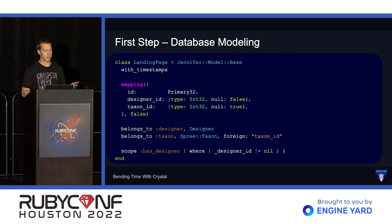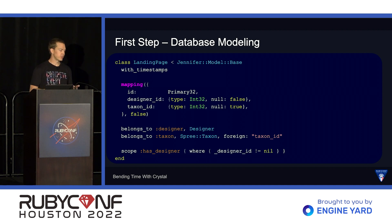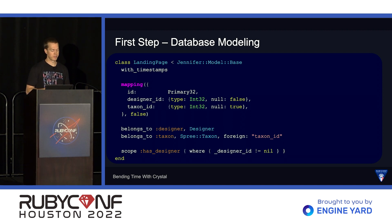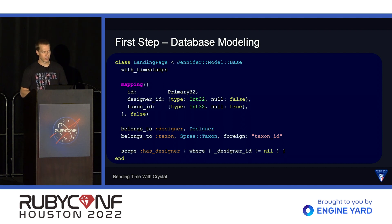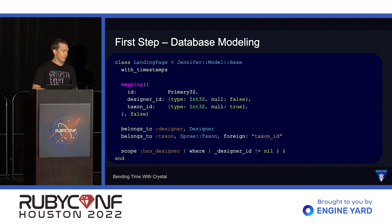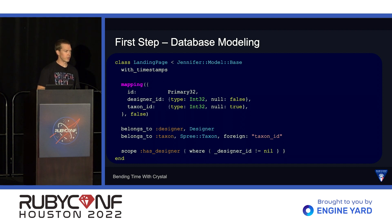At the very beginning, the class definition looks similar to Active Record models — we inherit from a base class that Jennifer provides. However, because Crystal is strongly typed and compiled, we need to provide some type information. So we tell it that our data has timestamps, and then we also provide designer ID, taxon ID, and the primary key for ID. We then provide information about the associations through belongs_to designer and belongs_to taxon, just like we do in Rails. And we also set up a single scope that we're going to use later.